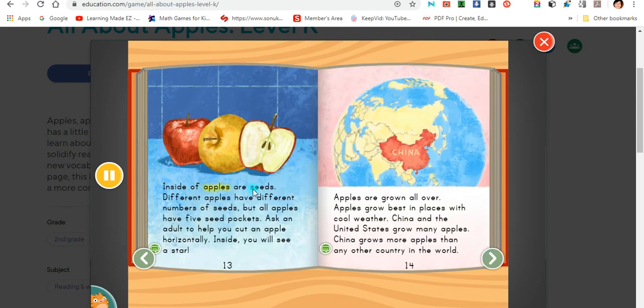Inside of apples are seeds. Different apples have different numbers of seeds, but all apples have five seed pockets. Ask an adult to help you cut an apple horizontally. Inside, you will see a star.